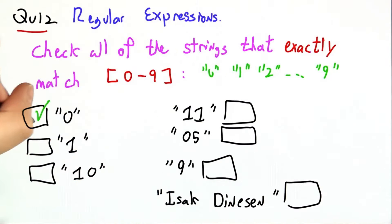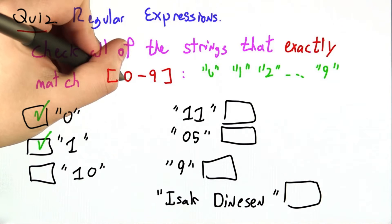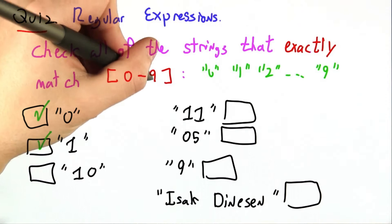0 is certainly in this set, so 0 matches 0 through 9. 1 matches 0 through 9. Remember the interpretation is everything between and including the beginning, up to and including the end.